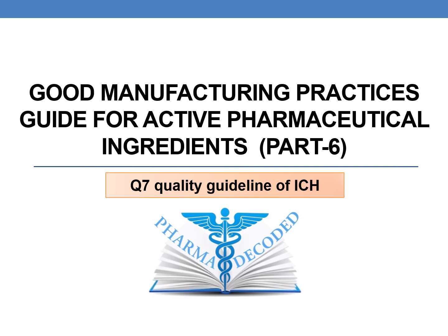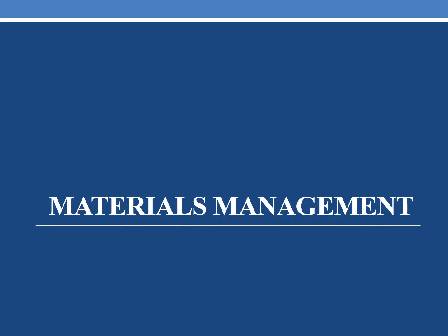Hello everyone. Let us discuss Good Manufacturing Practices Guide for Active Pharmaceutical Ingredients, Part 6. This comes under Q7 Quality Guideline of ICH, and this is a continuation of Part 5. Here we will be first discussing about Materials Management.